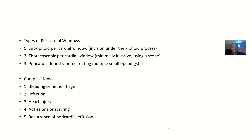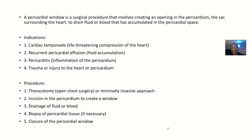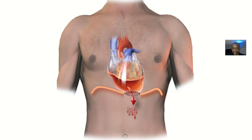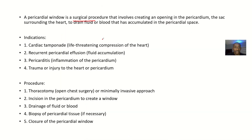Then post-procedure care — things you need to do for patients after the operation. So the pericardial window is a surgical procedure that involves creating an opening in the pericardium surrounding the heart, in cases where there's pericardial effusion. As the fluid is surrounding and compressing the heart, you make an opening so the fluid can drain out. You're making this incision to drain out fluid or blood. If it is fluid, it's hydropericardium; if it is blood, it's hemopericardium — accumulated in the pericardial space.